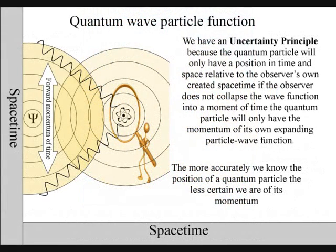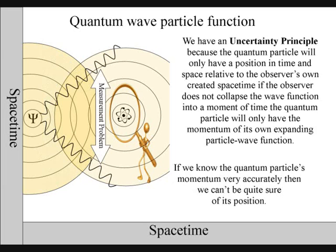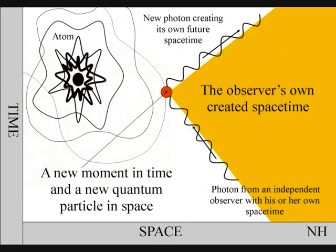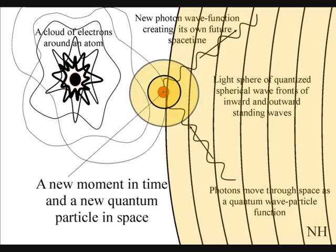Therefore, the more accurately we know the position of a quantum particle, the less certain we are of its momentum. And if we know its momentum very accurately, then we can't be quite sure where it is. This is because to observe the quantum particle, we create a photon-electron coupling, collapsing the wave particle function into a moment of time and space, that is part of the observer's own created space-time.